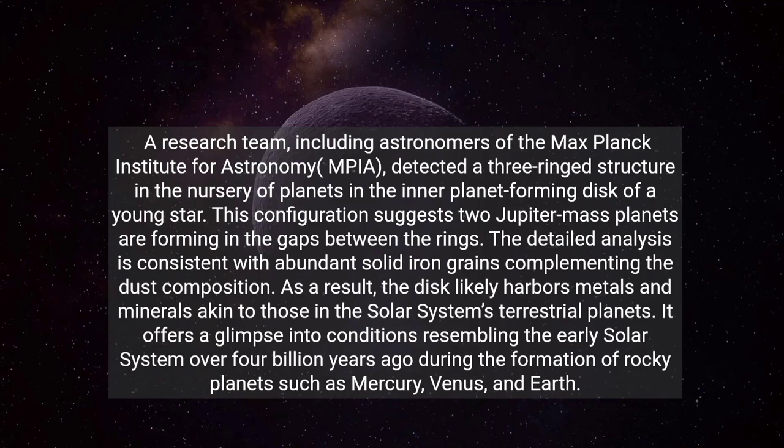A research team, including astronomers of the Max Planck Institute for Astronomy MPIA, detected a three-ringed structure in the nursery of planets in the inner planet-forming disk of a young star. This configuration suggests two Jupiter-mass planets are forming in the gaps between the rings. The detailed analysis is consistent with abundant solid iron grains complementing the dust composition.